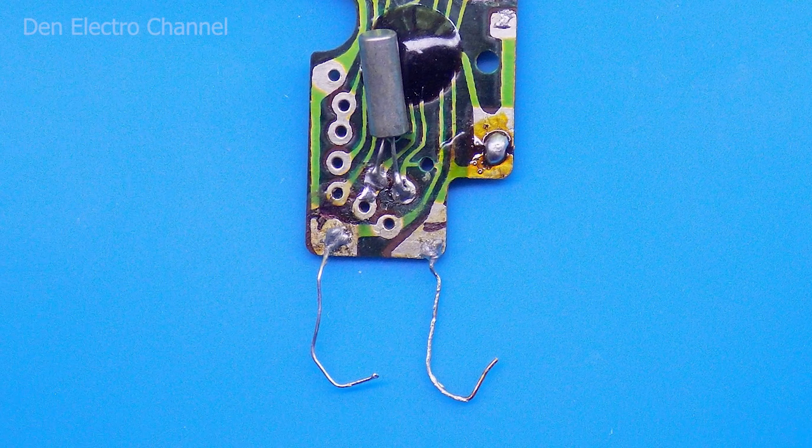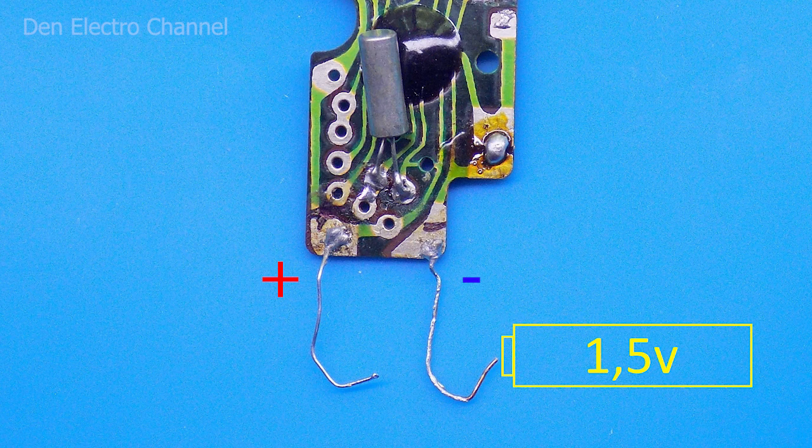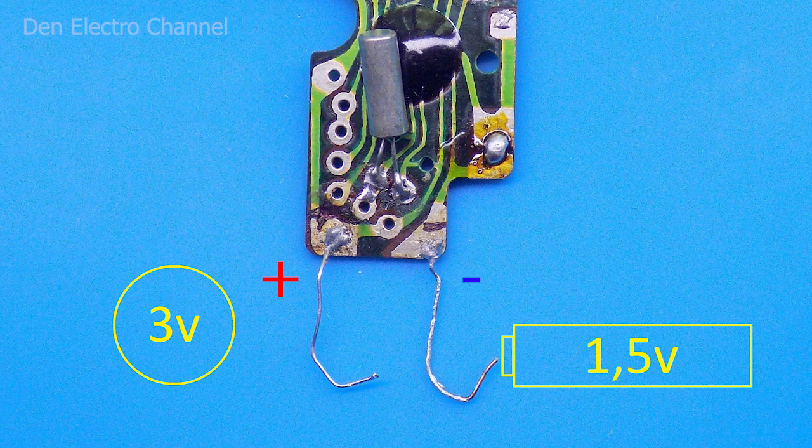At the very bottom of the board, power is connected. The clock was powered by a single 1.5 volt battery. But in order for the LEDs to start glowing, you need to use more voltage. Therefore, we will take a 3 volt battery.